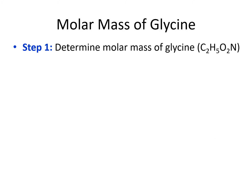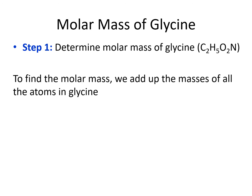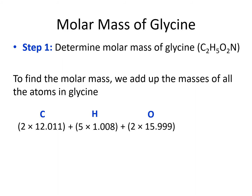In our first step, we calculate the molar mass of glycine by taking 2 times the mass of carbon, 5 times the mass of hydrogen, 2 times the mass of oxygen, and 1 times the mass of nitrogen, and adding them up. We come out with a molar mass of 75.067.